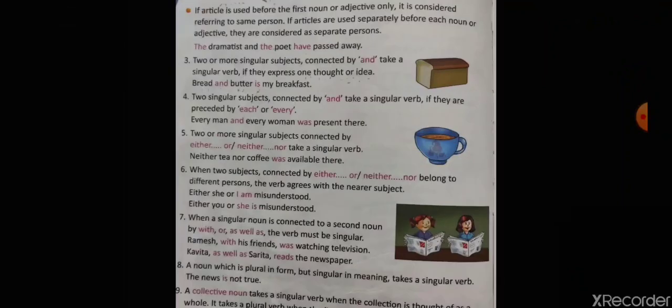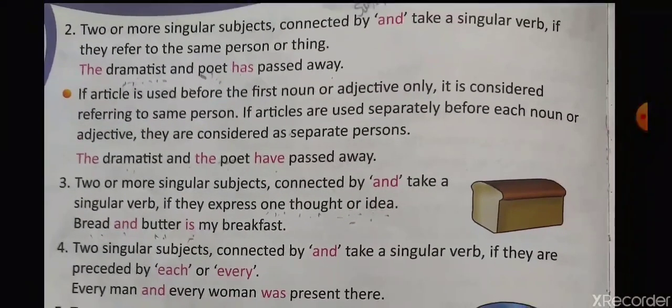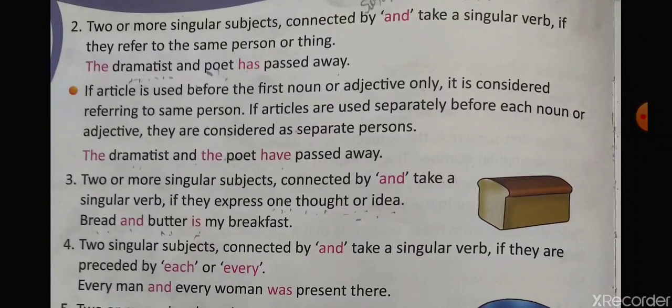Two or more singular subjects connected by 'and' take a singular verb if they refer to the same person or thing. Like, 'The dramatist and poet has passed away.' If the article is used before the first noun or adjective only, it is considered referring to the same person. If articles are used separately before each noun or adjective, they are considered as separate persons — for example, 'The dramatist and the poet have passed away.' Also, two or more singular subjects connected by 'and' take a singular verb if they express one idea or thought: 'Bread and butter is my breakfast' — here, bread and butter act as one and express only one thought, so the singular verb 'is' is used.